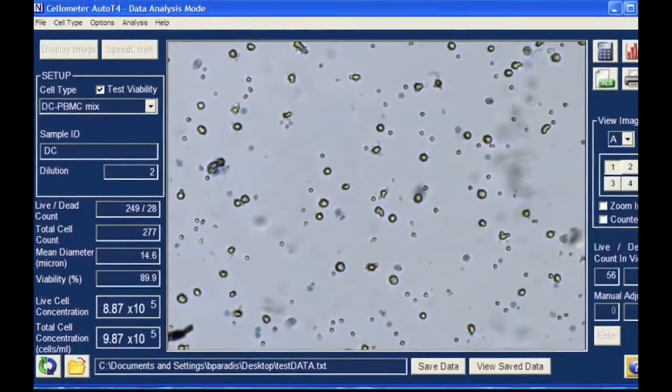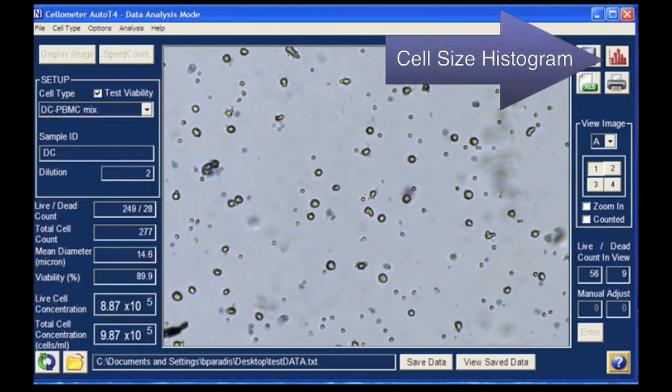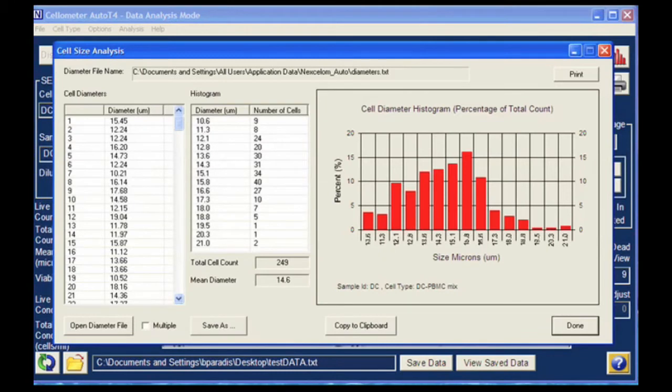The Cellometer software also records the diameter of each cell counted. Click on the Histogram icon to see a cell diameter histogram for the counted cells.